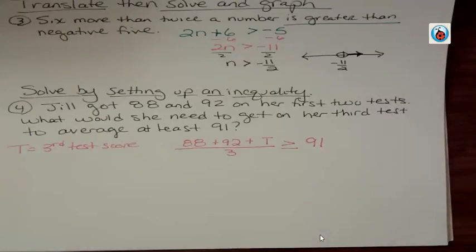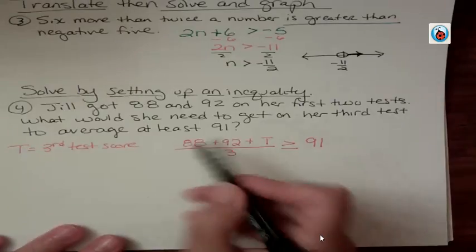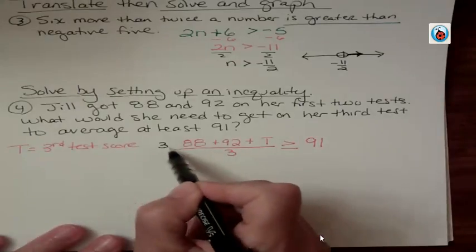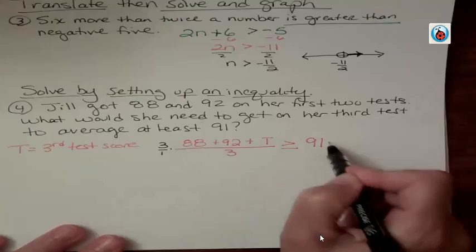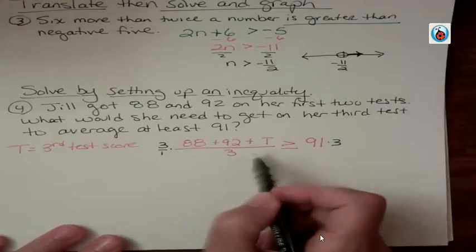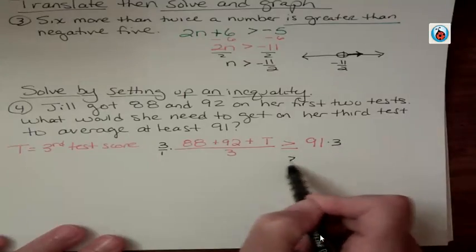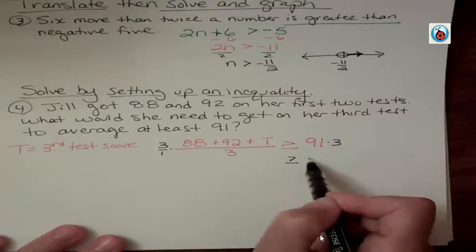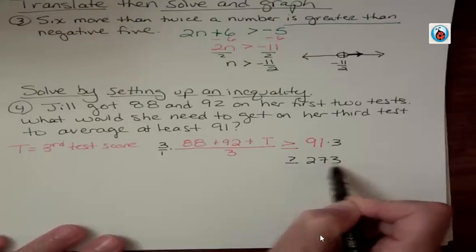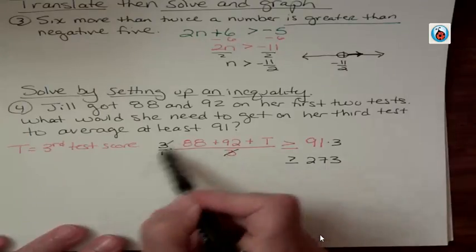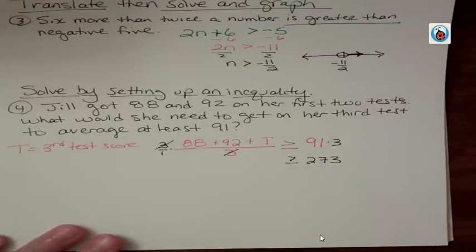So we want that whole thing to be equal to 91 or greater than 91. The first thing I would do here is get rid of this 3 by multiplying both sides by 3. Then the 91 times 3 is 273. And over here these 3's just cancel.